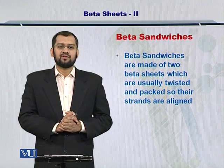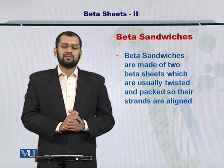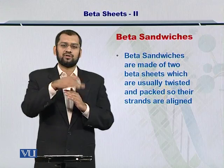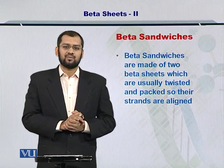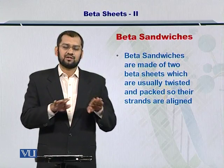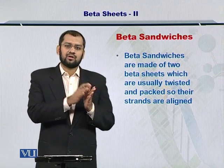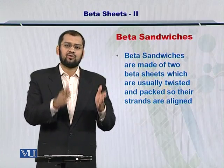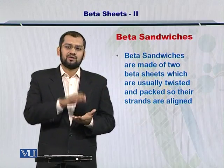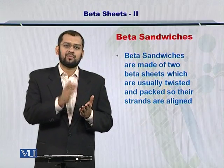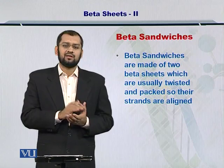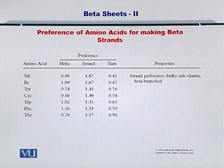Next, the beta sandwiches. They are simply beta sheets that are packed onto themselves and hence take the form of a sandwich. It's just like you have a bed sheet at your home and you can fold it, and therefore it gives rise to a sandwich-like structure. Same is the case with beta sheets — if you fold them on top of themselves, then a beta sandwich is formed.